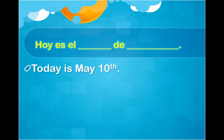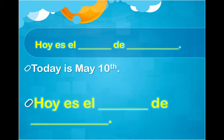Today is May 10th. First thing I'm going to do is write down my formula. The only thing I need to do is insert the appropriate word in the blank. The first blank is the number, so I'm going to count to 10.